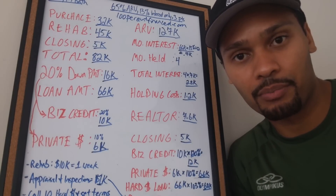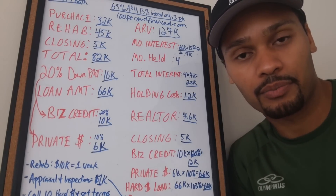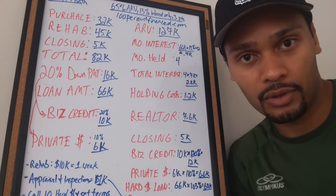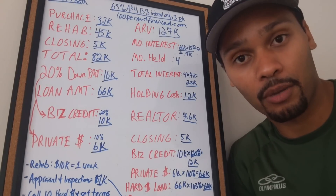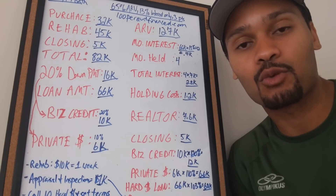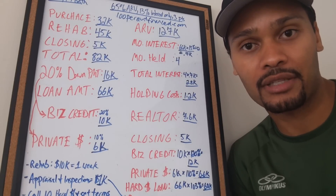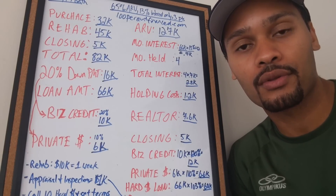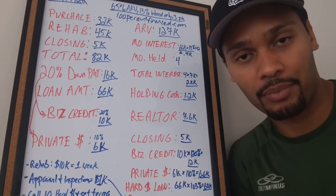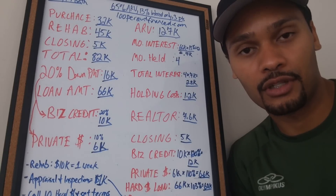You always want to get the ugliest, beat-up house on the prettiest, nicest block. So if you find this horrible-looking house with no copper pipes, no kitchen cabinets — gutted or stolen — Bank of America won't lend you money on that because it's not habitable. But a hard money lender will. They'll lend you money based on something called the After Repair Value, or ARV — basically how much the property would be worth based on location, what you do to it, and comparable sales in the area.